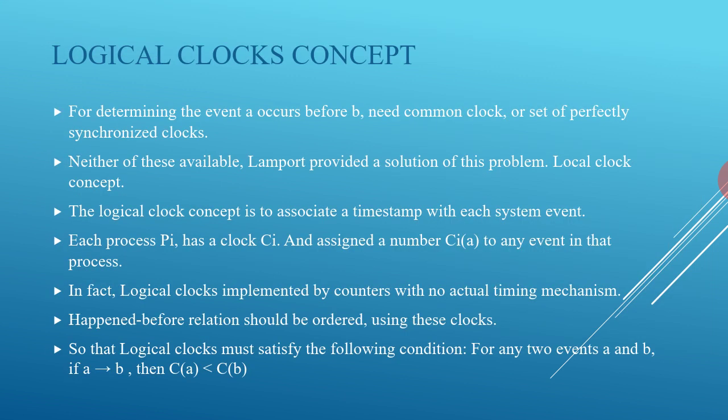The logical clock concept: determining whether event A occurs before B needs a common clock or set of perfectly synchronized clocks, but neither of these are available. The logical clock concept is to associate a timestamp with each system event. Each process Pi has a clock Ci and assigns a number Ci(a) to any event in that process. In fact, logical clocks are implemented by counters with no actual timing mechanism.